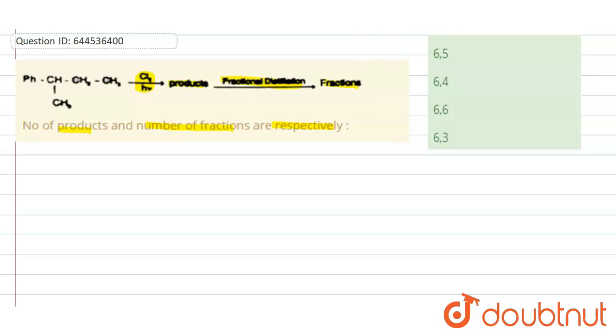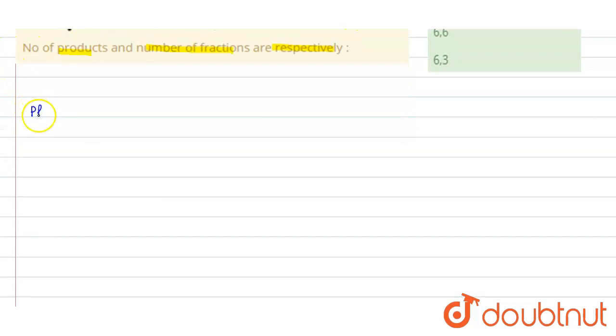After chlorination, here monochlorination is happening. So this is your substrate: Ph-CH-CH₃-CH₂-CH₃. This is your substrate. If it will undergo monochlorination, how many products will be formed?